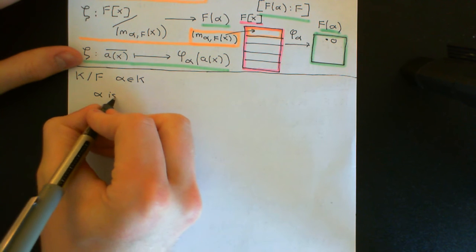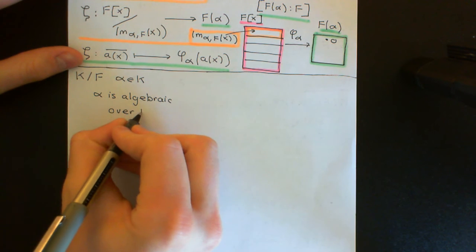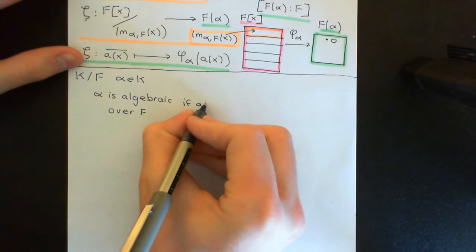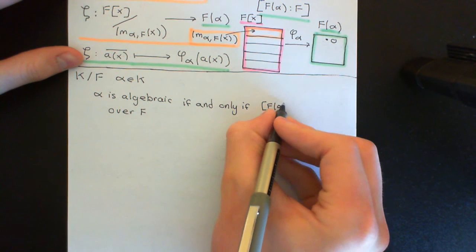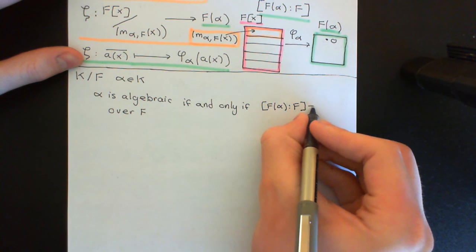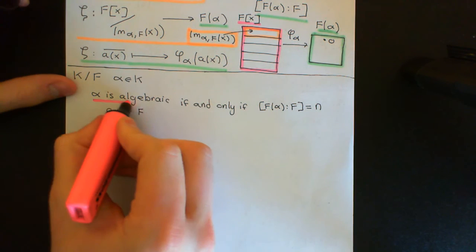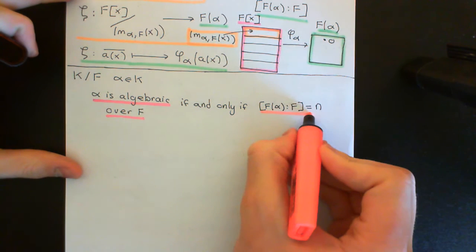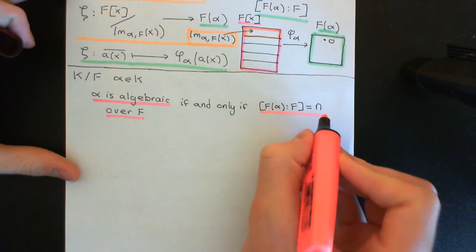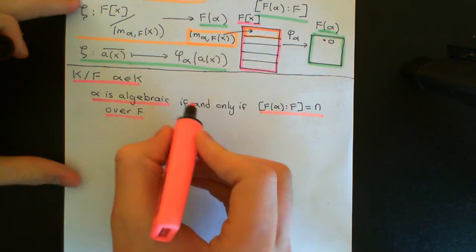So let me write this down. Alpha is algebraic over F if and only if the degree of the field generated by alpha over F is finite — equal to some little n, where little n is a finite natural number. We're trying to prove that these two statements are effectively utterly equivalent. That's what if and only if means.